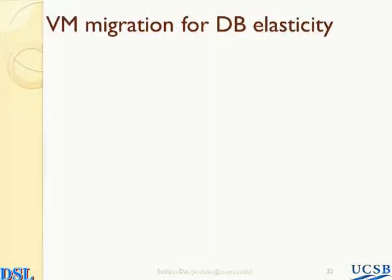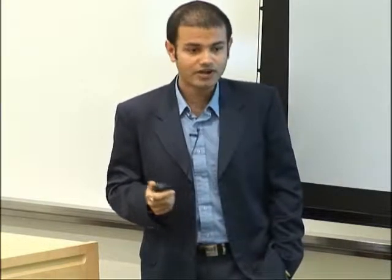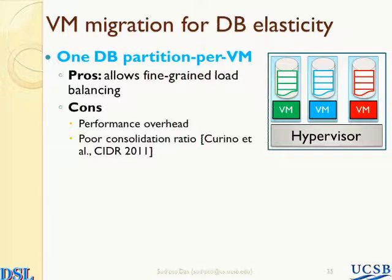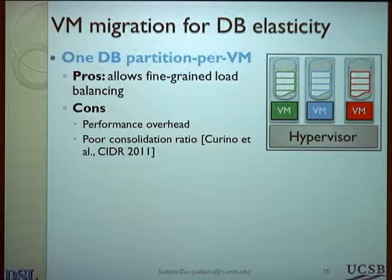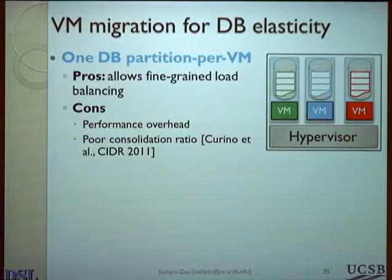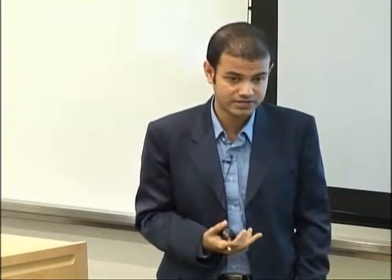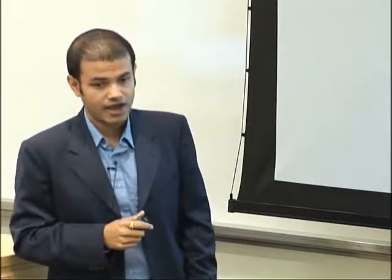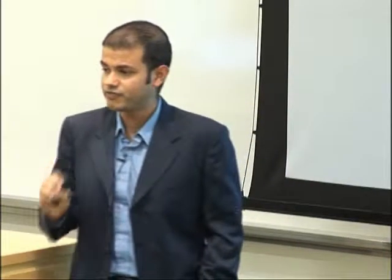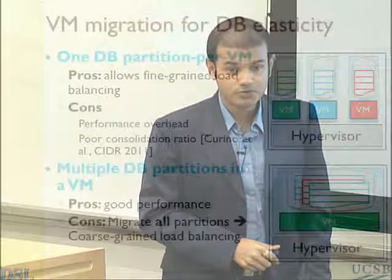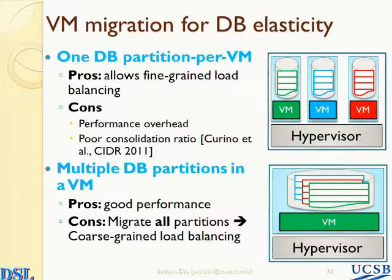One simple solution people might suggest is to use VM migration for database elasticity. One approach is to have every tenant give its own database running within a VM, with a hypervisor sharing these VMs at a single node. However, databases weren't designed for this kind of operation. If you're running multiple databases uncoordinated at the same node, performance can suffer — a recent paper shows the performance overhead can be as much as an order of magnitude, both in terms of performance and consolidation ratio. What you'd want is multiple different database partitions resident within the same database process, giving somewhat better performance.